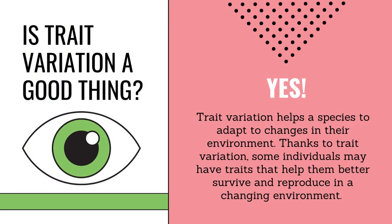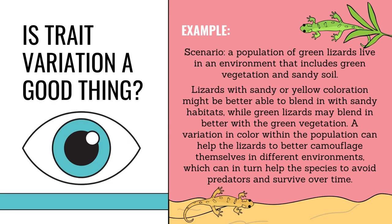Is trait variation a good thing? Yes. Trait variation helps a species adapt to changes in their environment. Thanks to trait variation, some individuals may have traits that help them better survive and reproduce. For example, a population of green lizards lives in an environment with green vegetation and sandy soil. Lizards with sandy or yellow coloration blend in better with sandy habitats, while green lizards blend in better with the vegetation. This variation in color helps the lizards camouflage themselves, avoid predators, and survive over time.